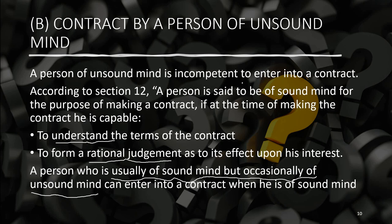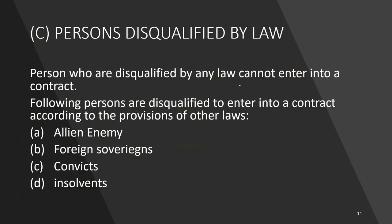A person of unsound mind is incompetent to contract. Generally, unsound mind covers drunkards, idiots, lunatics, and similar persons who cannot understand or rationally judge contract terms.